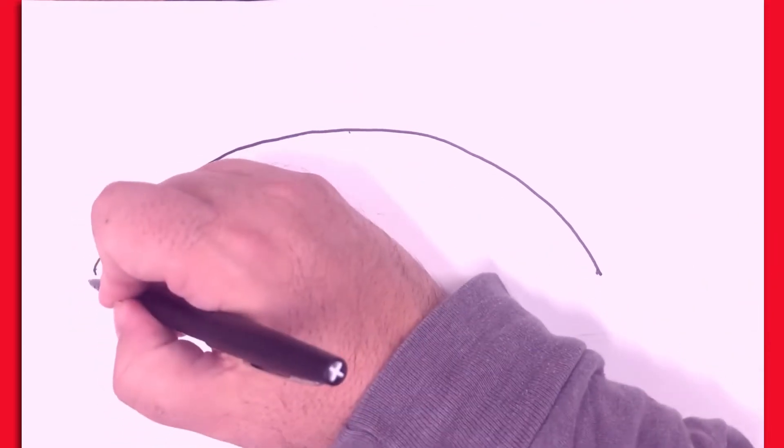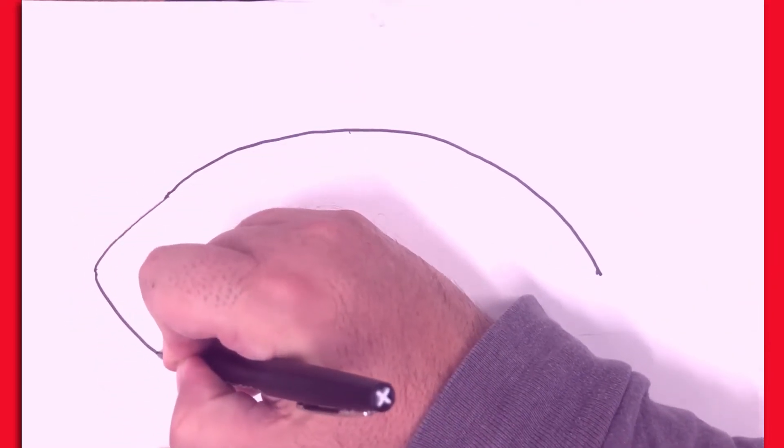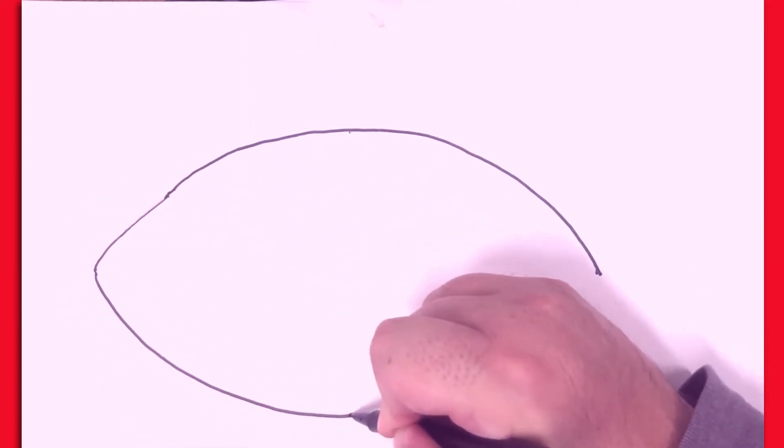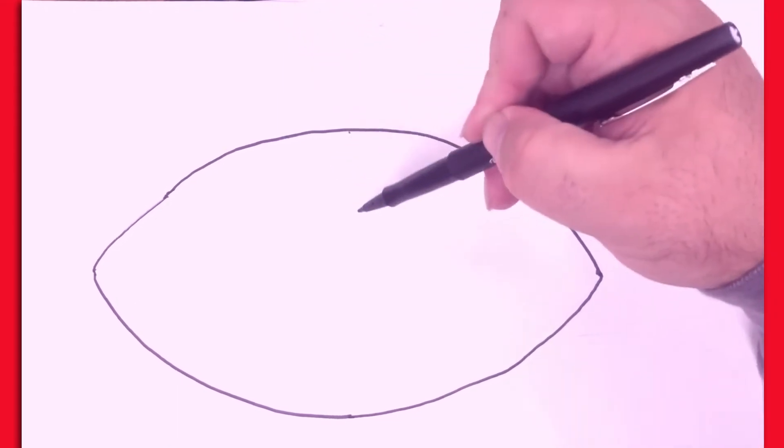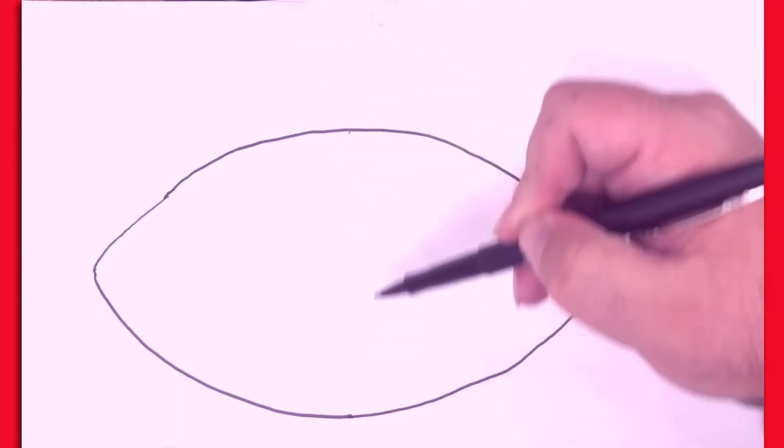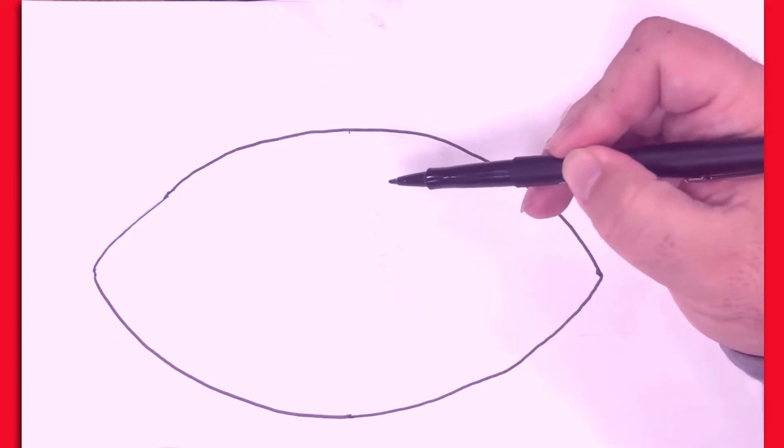The next thing I'm going to do is draw the curved bottom line of the football. And so now we have the shape that's kind of like an eye, but if you look carefully the top half is not quite as wide as the bottom half. It's a little bit narrower up here.